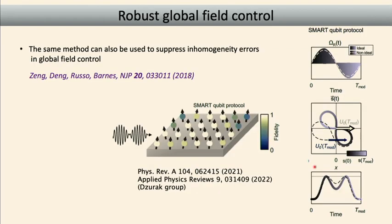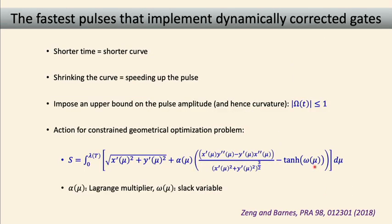This idea was also pursued by the Zurich group, who took this geometric approach and designed gates for global fields that could address qubits despite the fact that they have slightly different frequencies — essentially treating the noise as inhomogeneities across an ensemble of qubits.